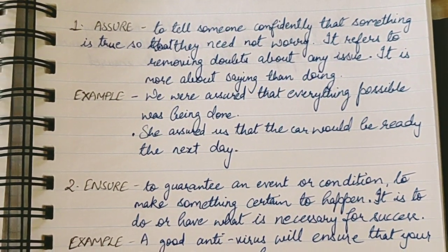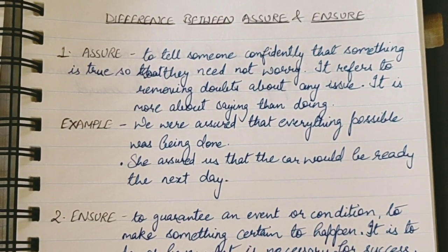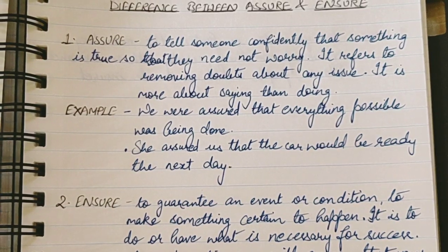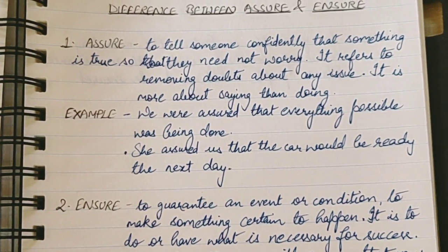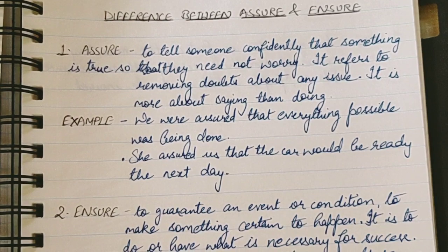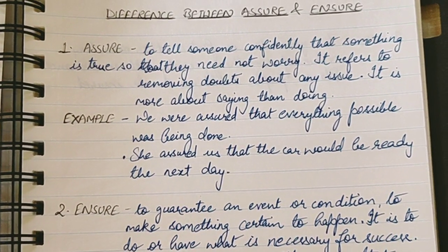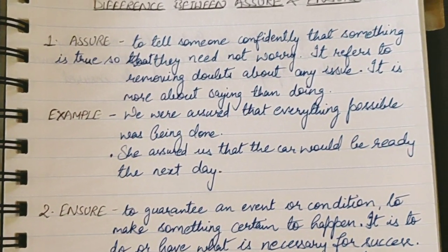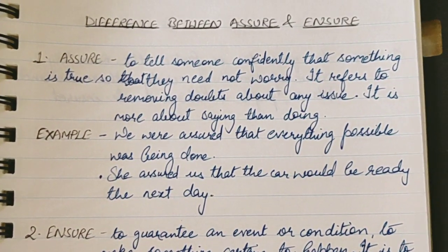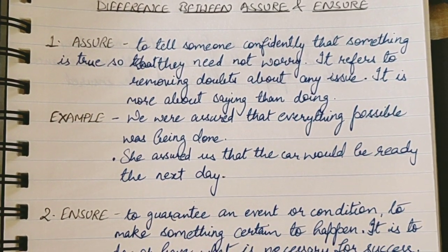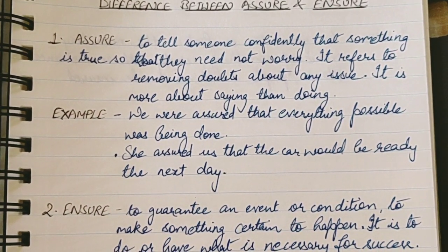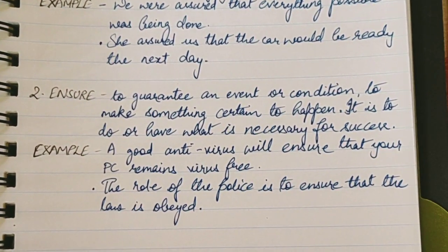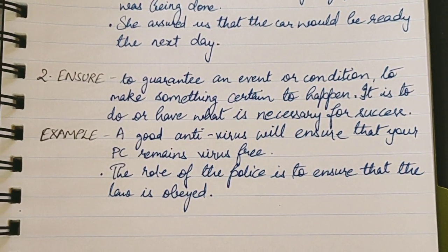In these two sentences, we can see that the focus is on saying, not on doing. When action has not yet taken place but a statement is given by someone just to assure someone — just to make the other person believe that something is going to happen — that is how we use the word 'assure.' Now the second word is 'ensure.'